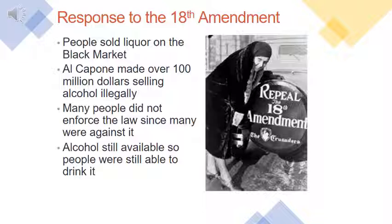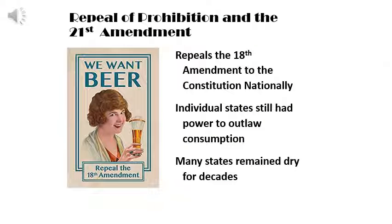People sold liquor on the black market. Al Capone, the notorious gangster out of Chicago, made over 100 million dollars selling alcohol illegally. Many people did not enforce the law since many were against it, especially in big cities made popular through the Industrial Revolution. Since most people were against the 18th Amendment and individuals in large urban centers continued to consume alcohol, the 18th Amendment and prohibition were repealed by passage of the 21st Amendment.